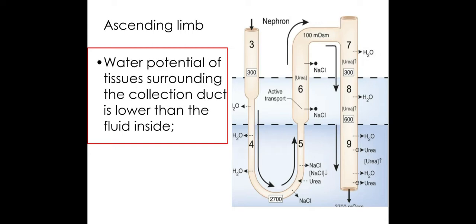In the ascending limb, the water potential of the tissues surrounding the collecting duct is lower than the fluid inside it. As a result of this water potential decrease going down the medulla, water will leave the collecting duct and be reabsorbed back into the blood, where it will be taken and used elsewhere in the body. We'll learn more about the collecting duct and the hormones that impact it in the next video.